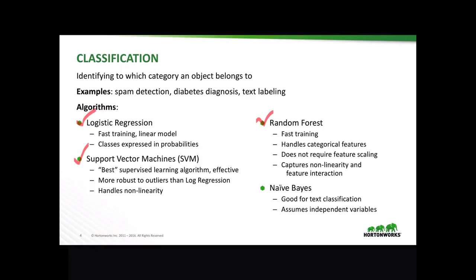Random forest is also fast. It handles categorical features, does not require feature scaling, and captures non-linearity and feature interaction. Finally, naive Bayes is great for text classification. It assumes independent variables — for example, in the case of text, it assumes that each word contributes to the overall probability independently.